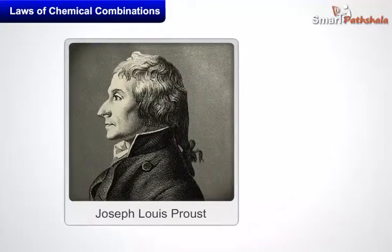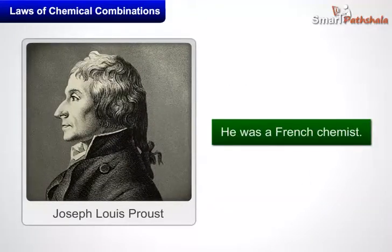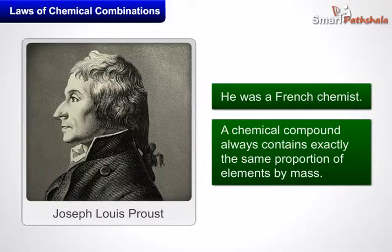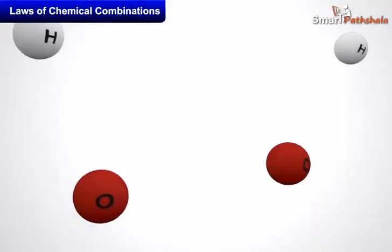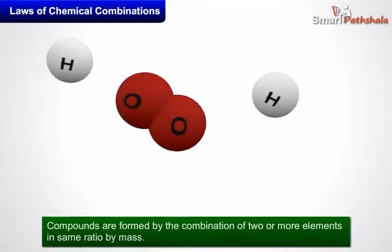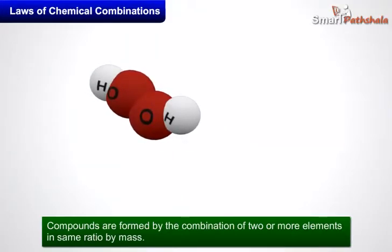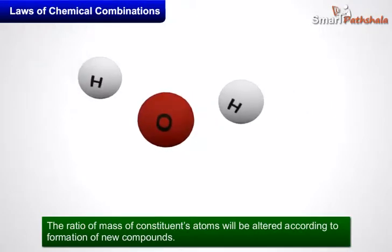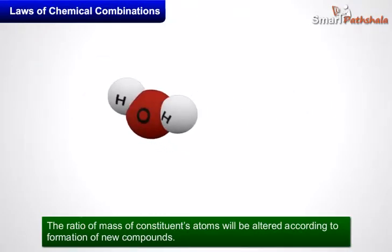...he was a French chemist who stated that a chemical compound always contains exactly the same proportion of elements by mass. This means compounds are formed by the combination of two or more elements in the same ratio by mass, but the ratio of mass of constituent atoms will be altered according to the formation of new compounds, like water, hydrogen peroxide, etc.